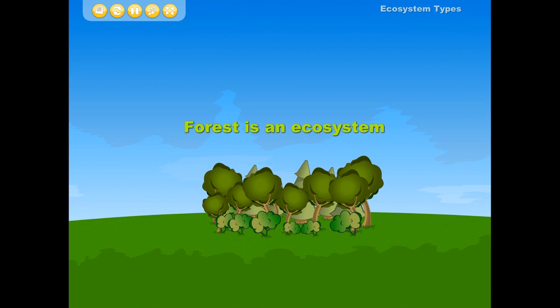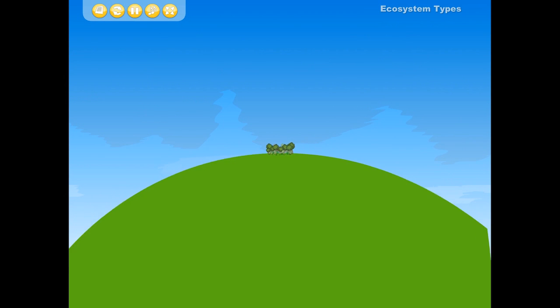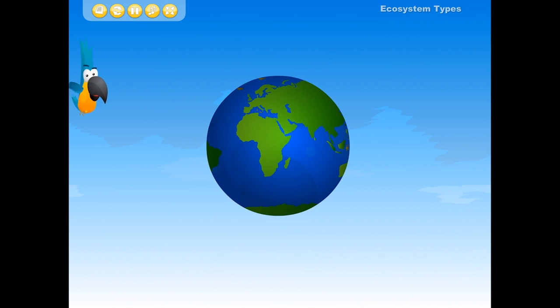Remember that ecosystems do not have any strict boundaries. For example, a forest is an ecosystem, but the anthill in that forest is also an ecosystem. The size or limit of an ecosystem depends on the area that is examined. The earth is also a giant ecosystem.